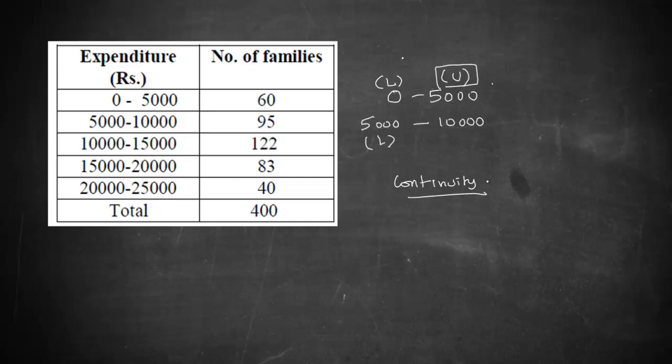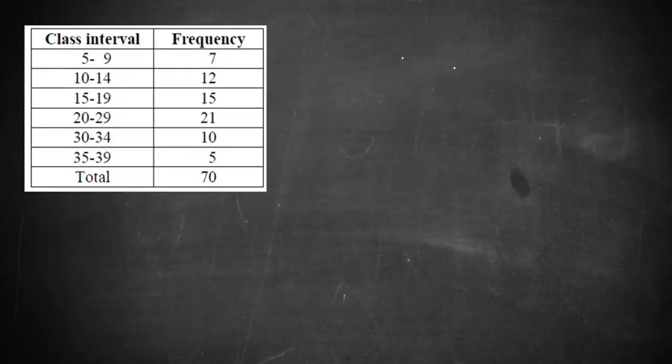The second method is exclusive method. In exclusive method if you could notice you have your first class interval as 5-9 whereas 5 is the lower limit and 9 is the upper limit. Here in your second class interval it begins with 10 and it ends with 14.